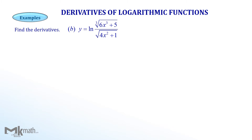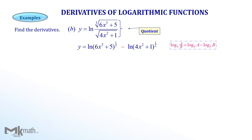Let's take a look at the second example. Find the derivative of y equals ln of the cube root of (6x cubed plus 5) over the square root of (4x squared plus 1). We can see the log of a quotient, so let's use the quotient property of logs. A log of a quotient can be changed into the difference of two logs, so we rewrite it using the property. Notice that the cube root is changed to a one-third exponent and the square root to one-half. We still see the exponent, so we apply the power property of logs to move the exponent in front of the log.